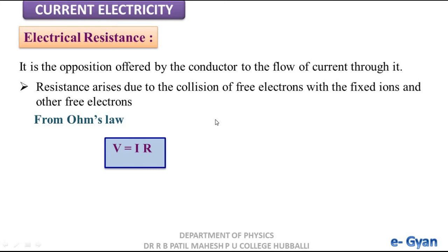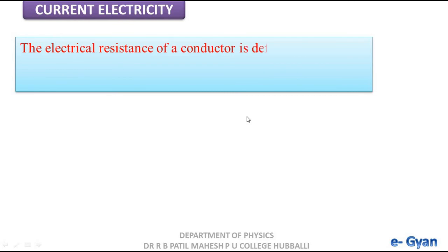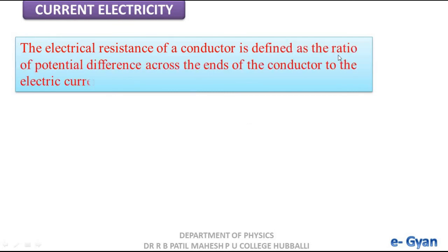By Ohm's law, V equals I into R. Rearranging, R equals V divided by I. Using this expression, electrical resistance is defined as the ratio of the potential difference across the ends of the conductor to the electric current flowing through it.